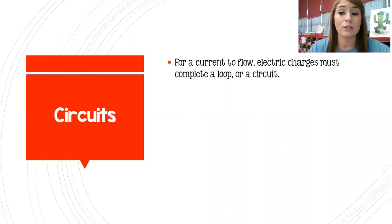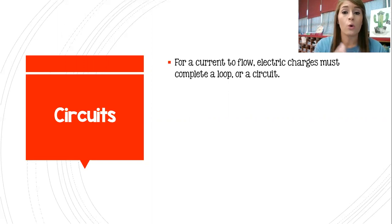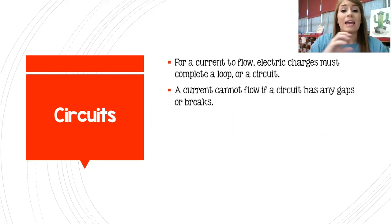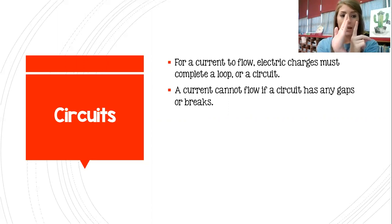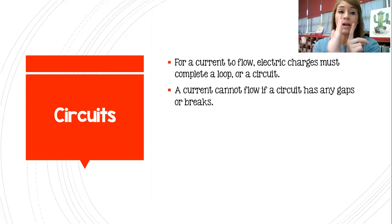For a current to be able to flow, electric charges are going to have to be able to complete a loop or a circuit. If there is any gap or any break in the circuit, that electricity cannot flow. It has to be able to go continuously through that loop or through that circuit.